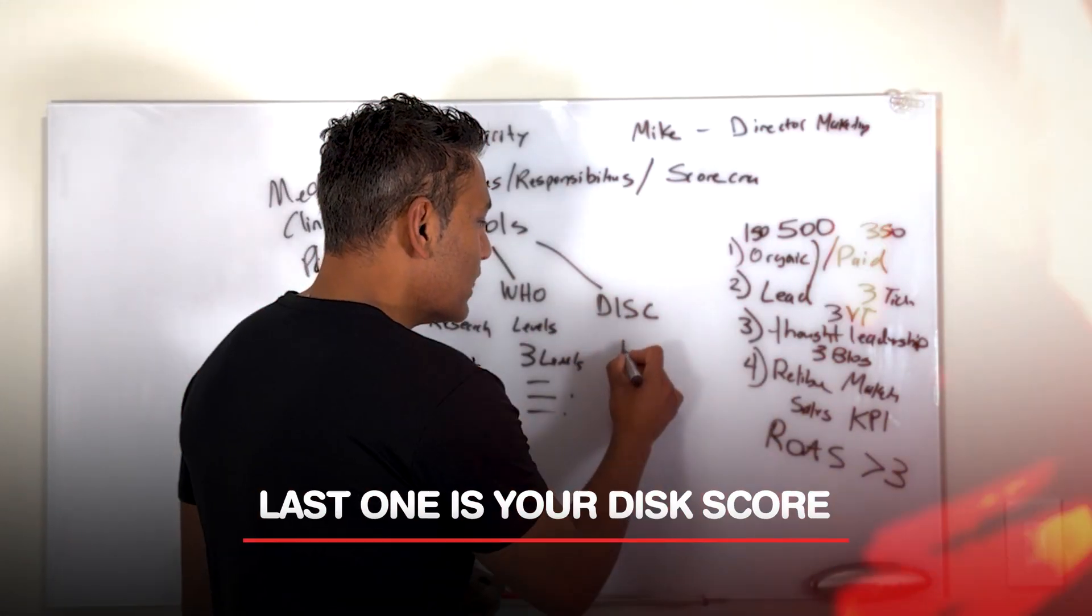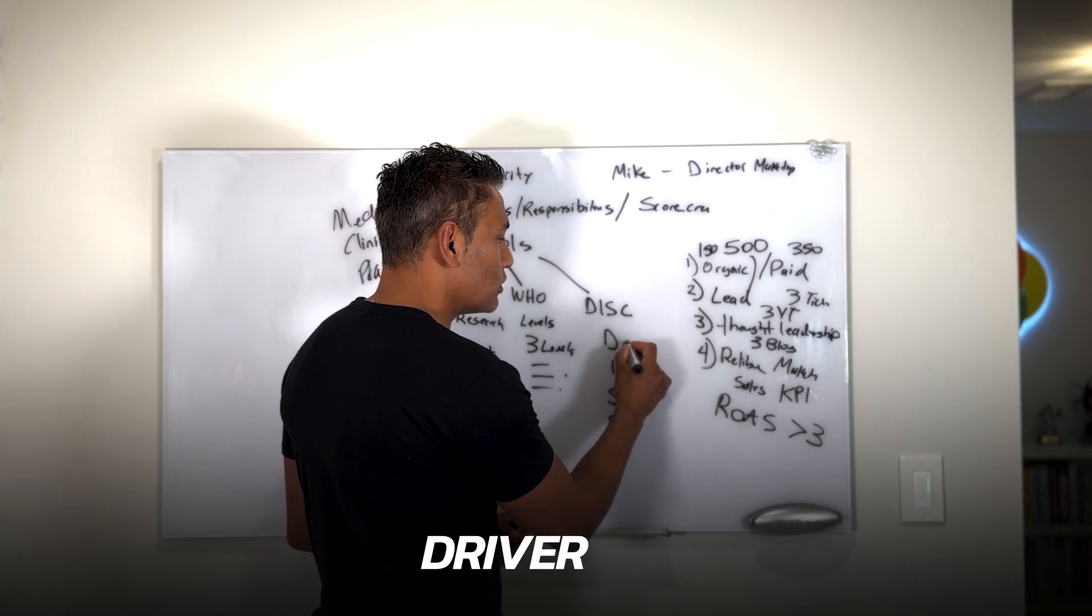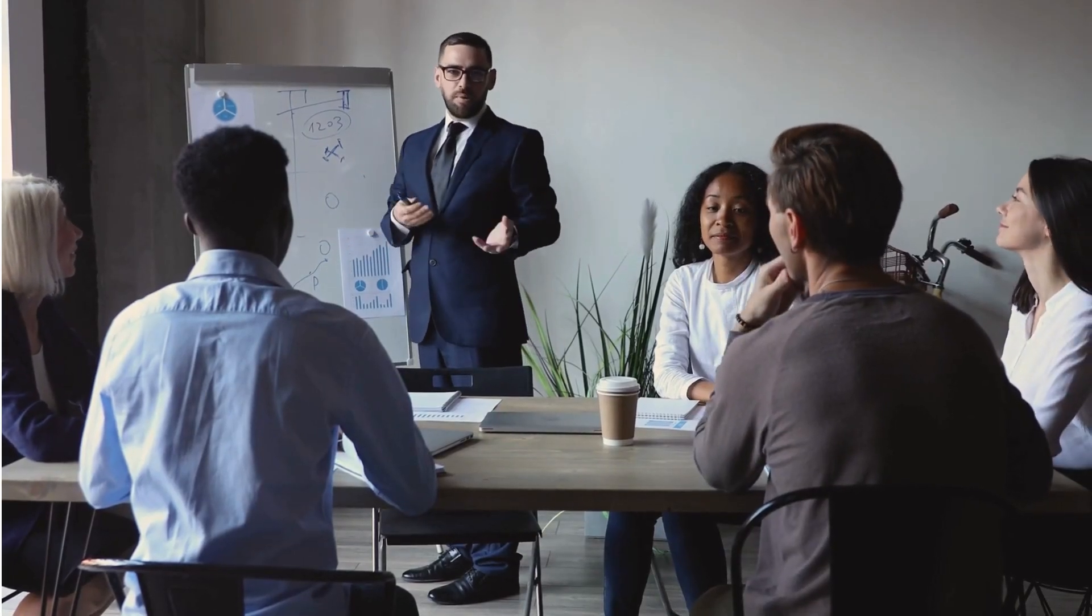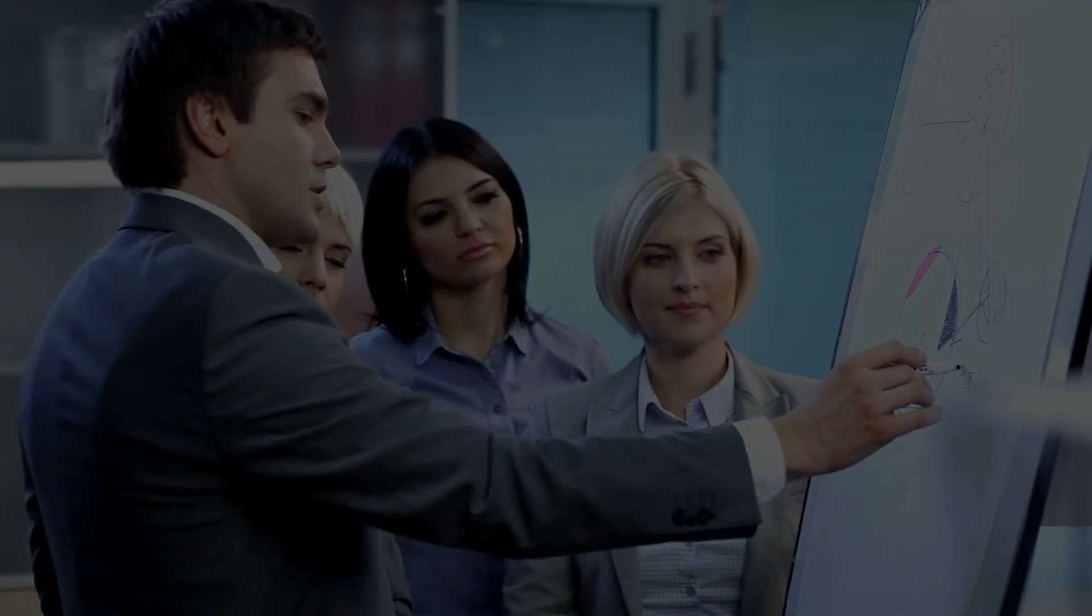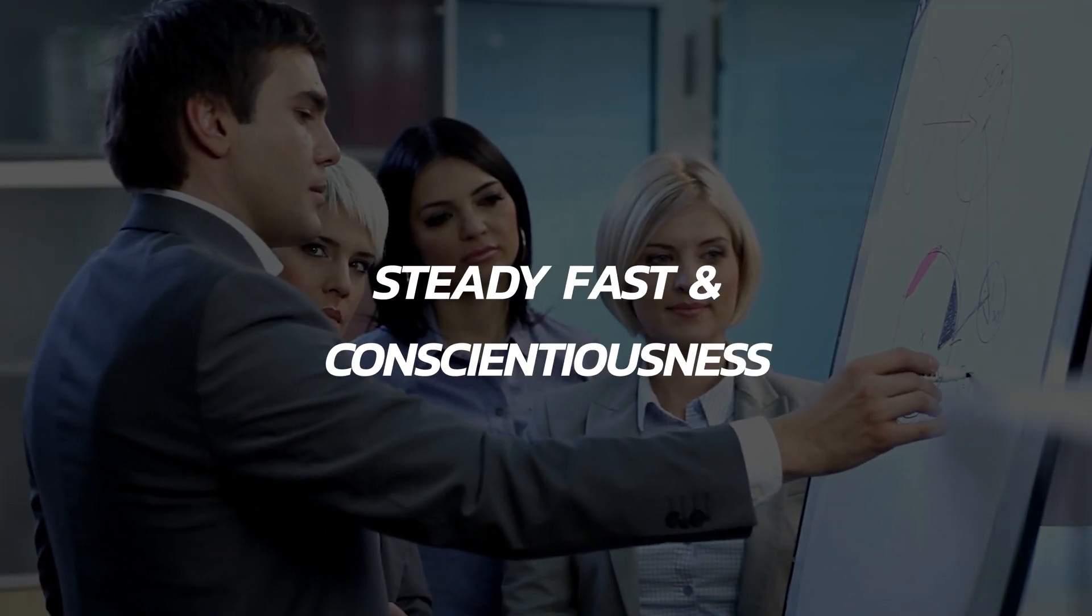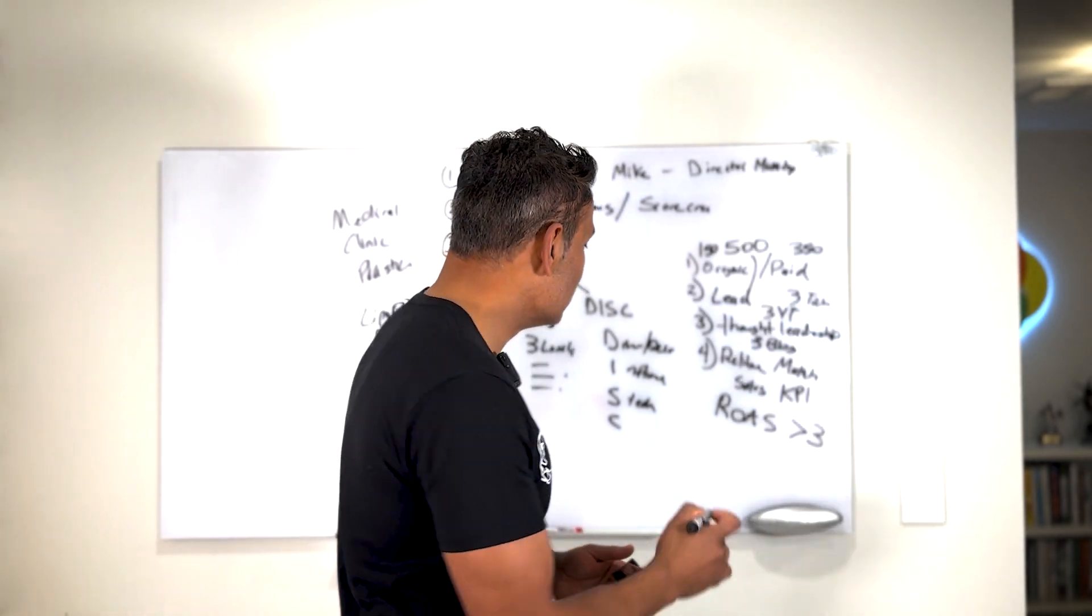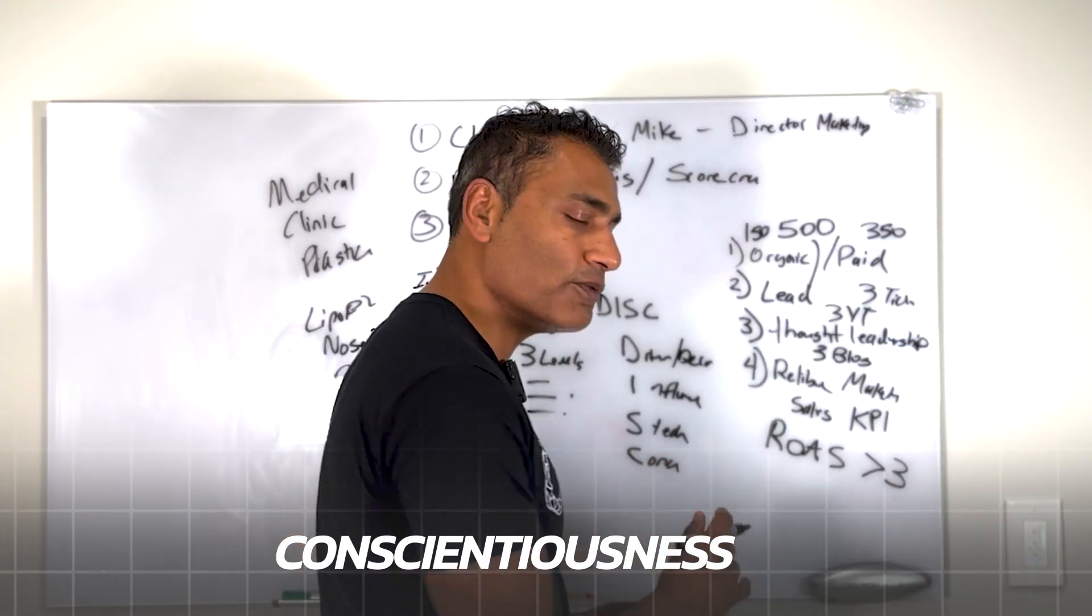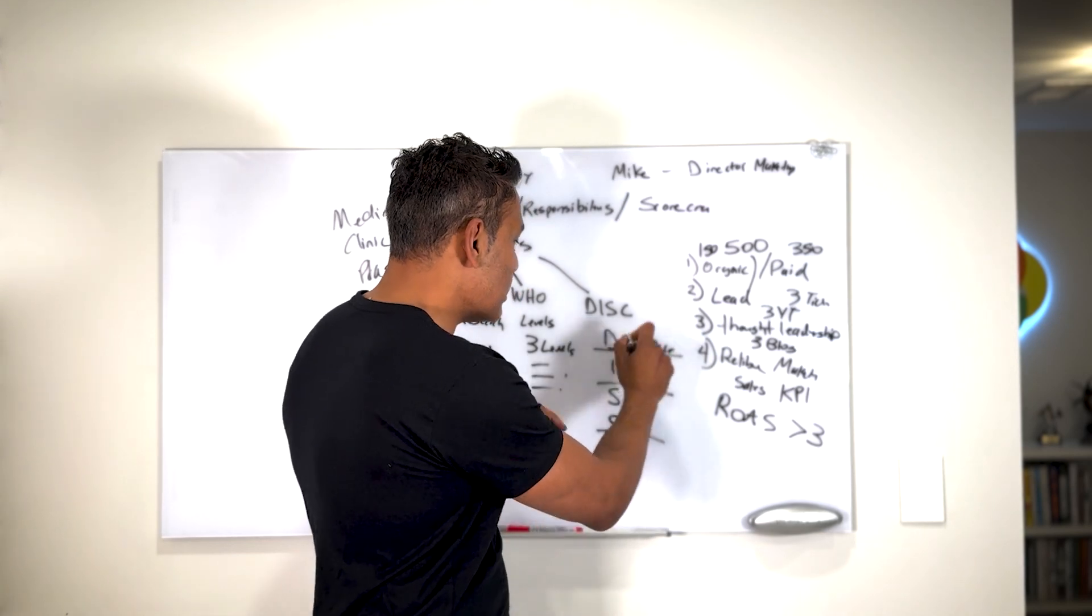And the last one is the DISC score. DISC stands for D-I-S-C. D stands for driver or decision maker or dominant. I stands for influencer, very connected, likes to talk to people, more extroverted, and more customer oriented. S stands for steady and conscientiousness. They're really thinking about everything, trying to keep everything stable. C stands for conscientiousness. They're very detail oriented. So the SCs usually go together. The Ds and the Is are separate too.